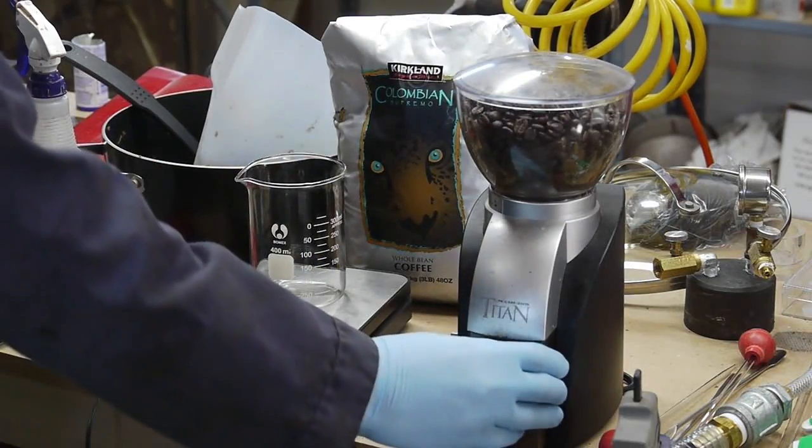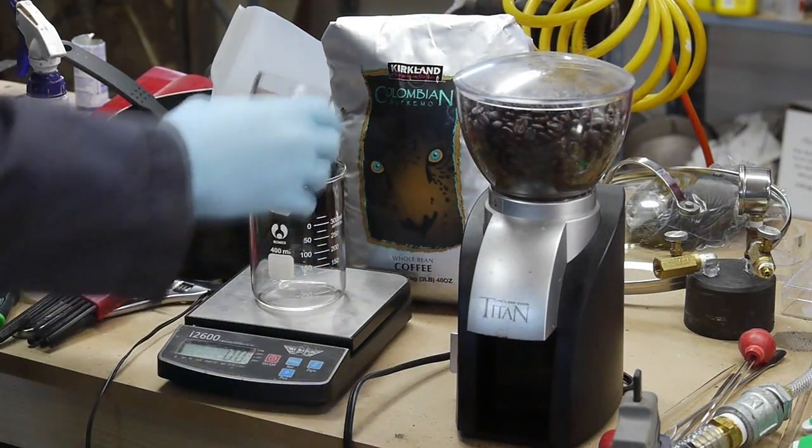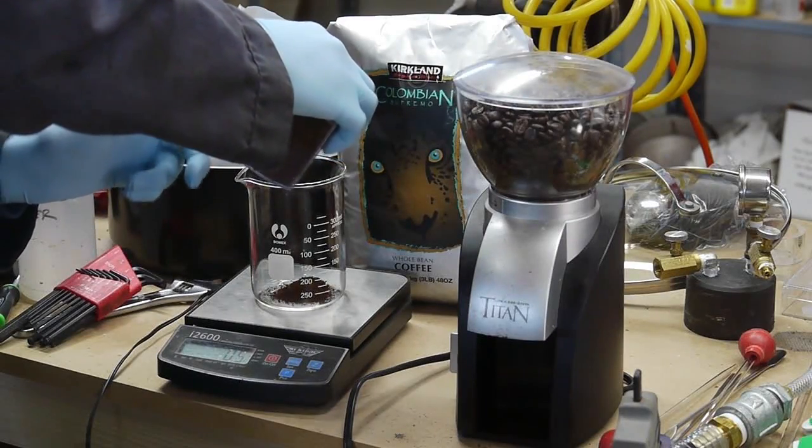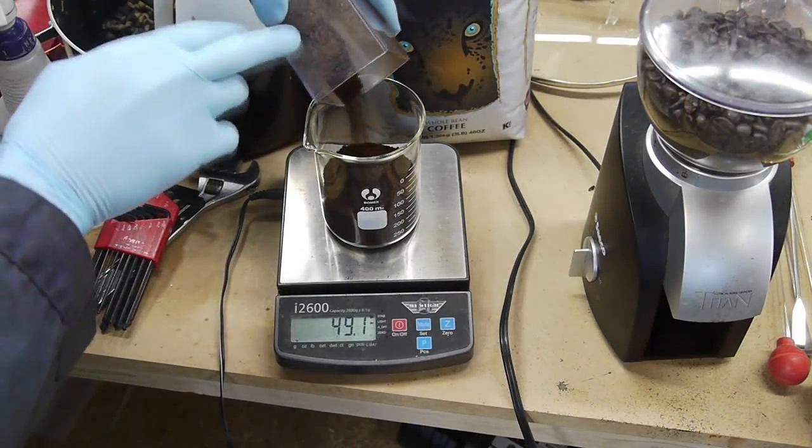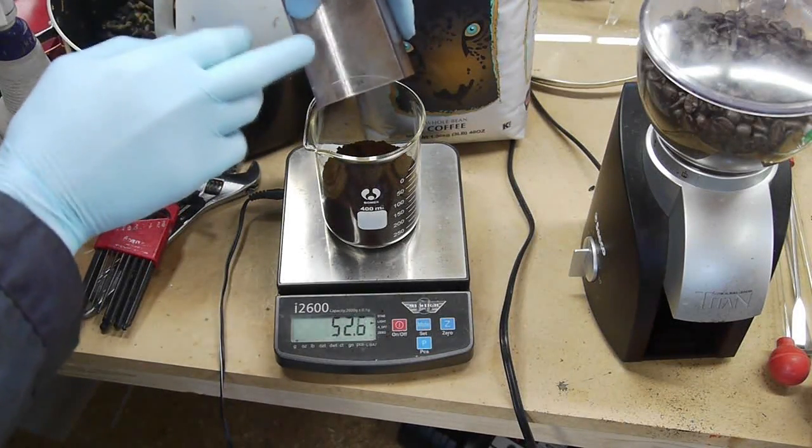So I started with about 50 grams of ground coffee - this is a medium roast Colombian - and ground it about as coarse as I would do for drip coffee, maybe a little bit finer, but not as fine as espresso grind. So it's kind of mid-range.